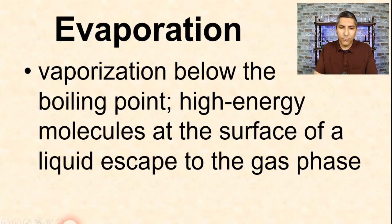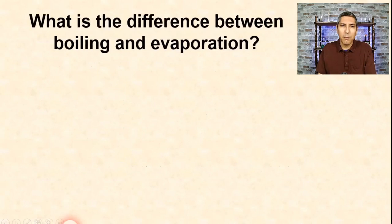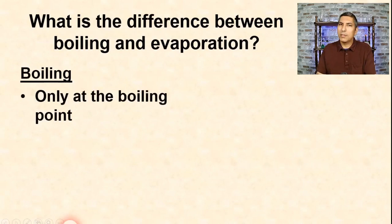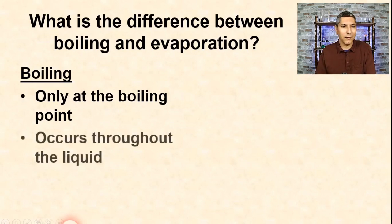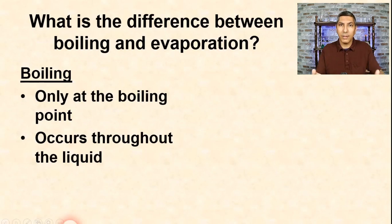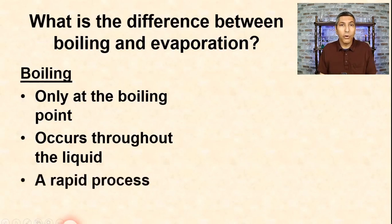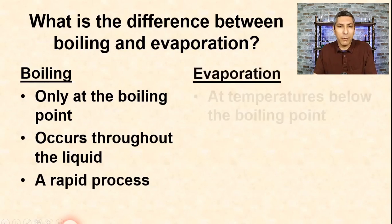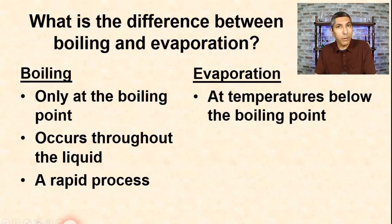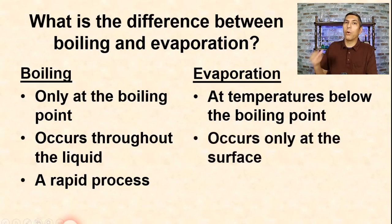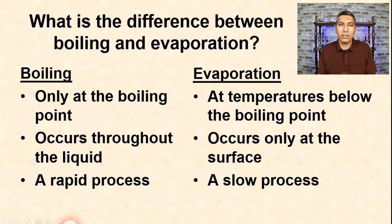Let's look at some key differences between boiling and evaporation. Boiling takes place only at the boiling point — a specific temperature — and it occurs throughout the volume of a liquid, with bubbles of vapor forming throughout. It's a very rapid process. Evaporation, on the other hand, takes place at temperatures below the boiling point — water can evaporate at room temperature or even below. Evaporation occurs only at the surface and is a relatively slow process.